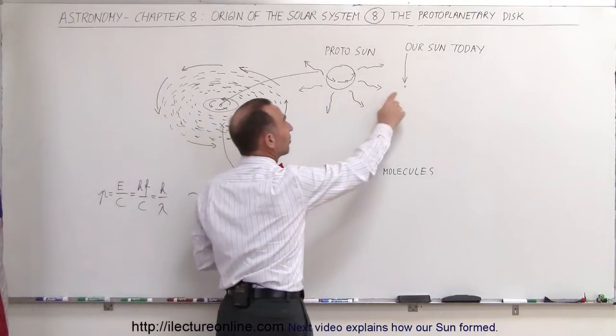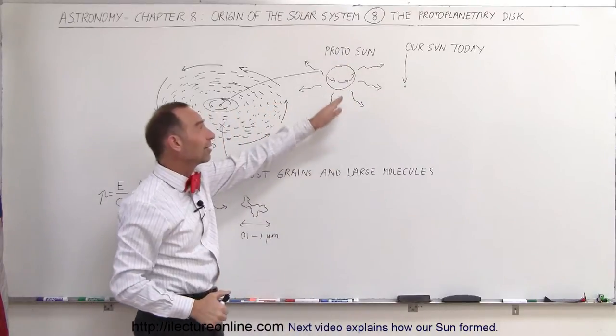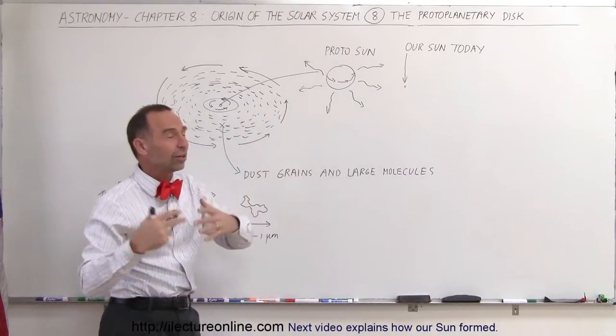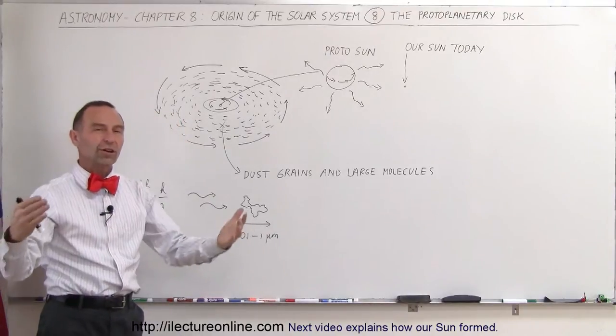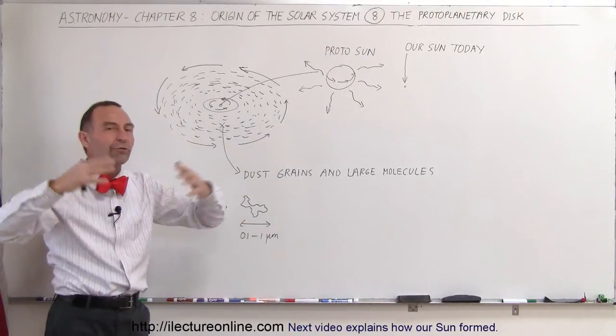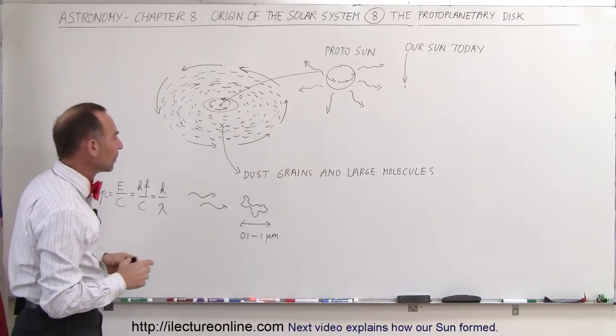As an example, if this is the current size of the Sun, the proto-sun when it was forming was probably about this size right here, much much larger than the Sun today. And because of its enormous size and enormous surface area, a lot of radiation would be going forward into the rest of the emerging solar system.